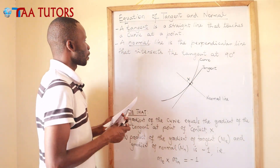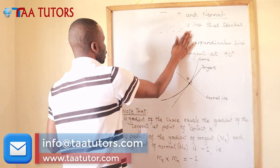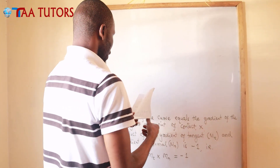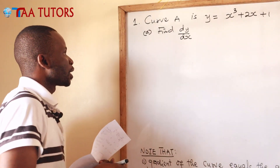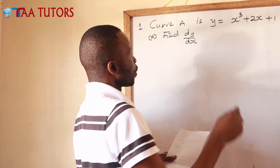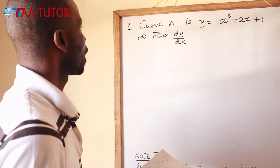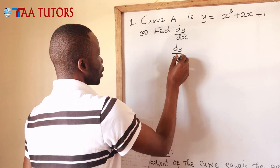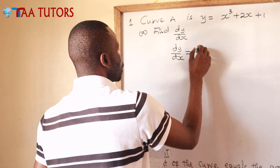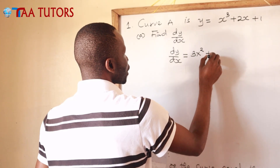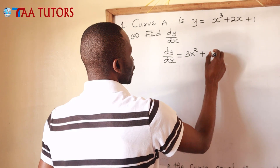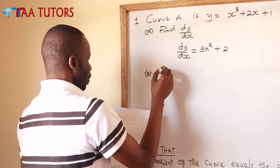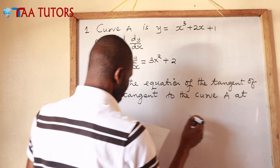Let's go to Example 1. The curve A is y equals x cubed plus 2x plus 1. Part a: find dy/dx. We bring 3 down, so it will be 3x squared; 3 minus 1 is 2. Plus the coefficient of x, which is 2. So dy/dx equals 3x squared plus 2. This is the gradient function. Part b asks us to find the gradient at the point (1, 4).